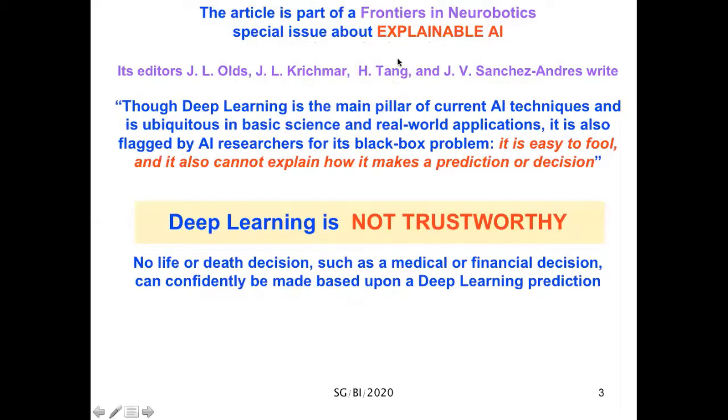The article was recently published in a special issue about explainable AI, whose editors wrote: though deep learning is the main pillar of current AI techniques and is ubiquitous in basic science and real-world applications, it is easy to fool and cannot explain how it makes a prediction or decision. In other words, deep learning is not trustworthy. No life or death decision, such as a medical or financial decision, can confidently be made using deep learning.